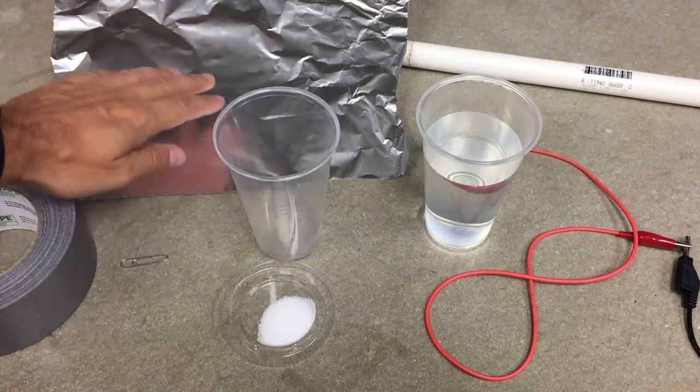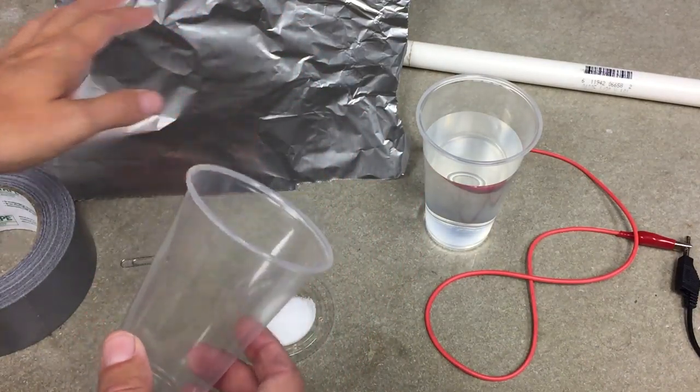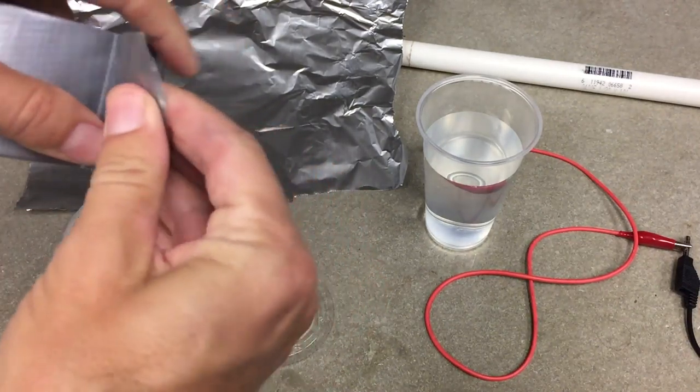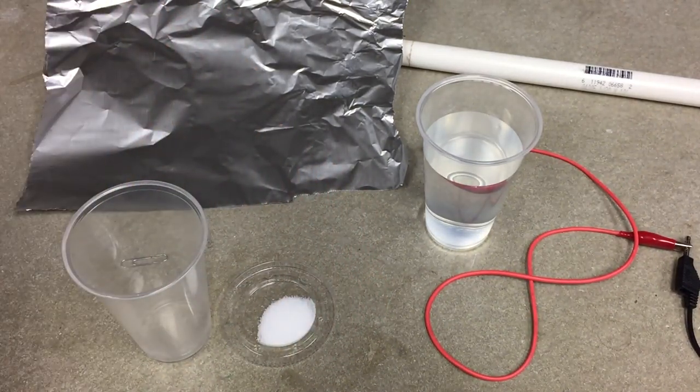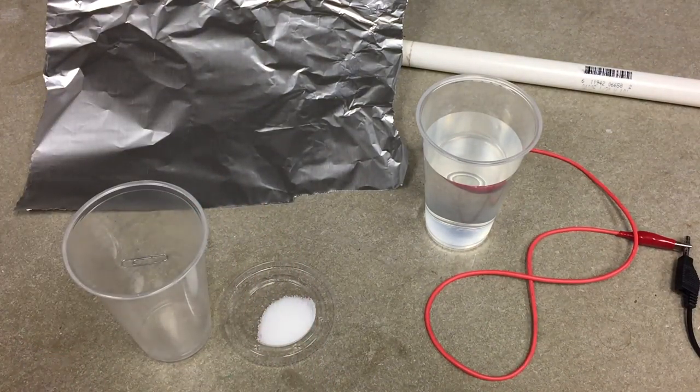I want to take the aluminum foil and wrap around the outside of the cup. You could cut this so it fits exactly, but it doesn't really matter. I'm going to get some tape here. I can tape it, it doesn't have to be pretty, just a little bit of tape to work right now.